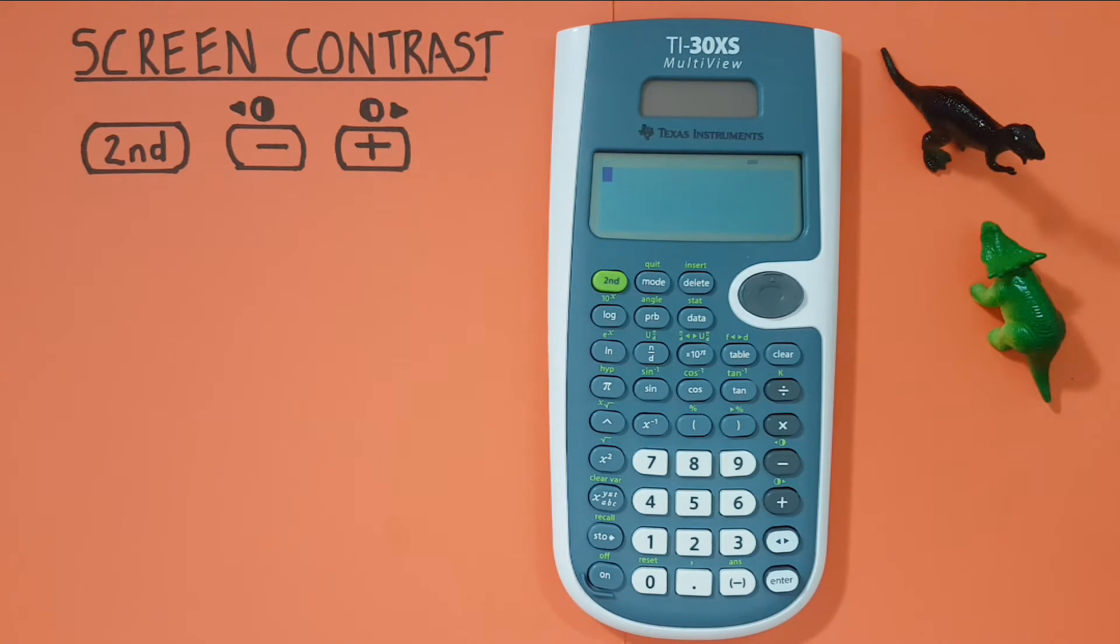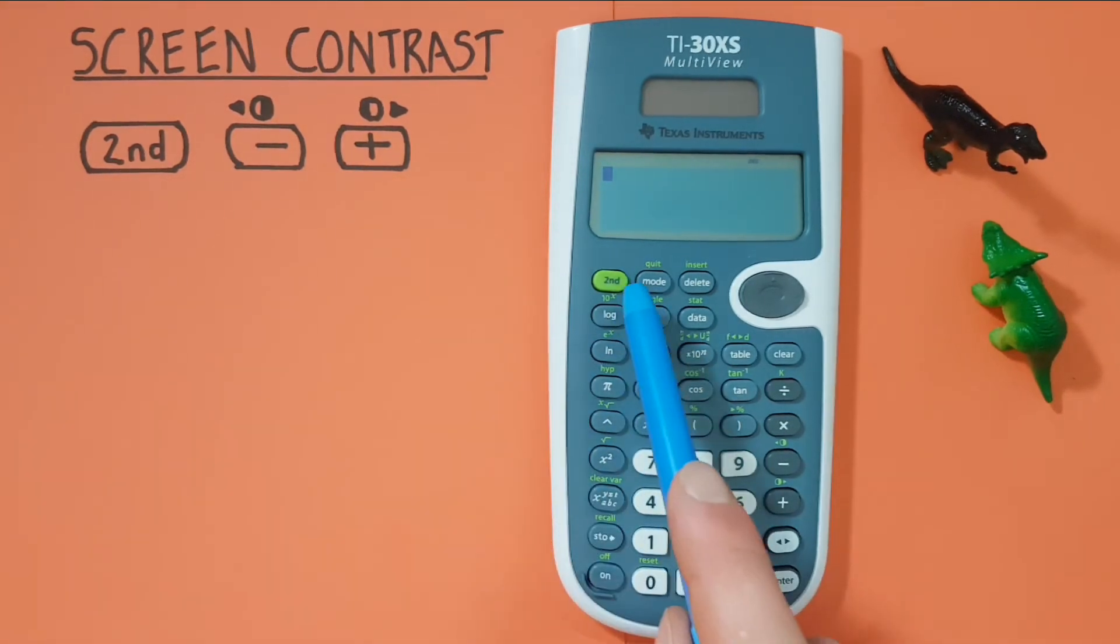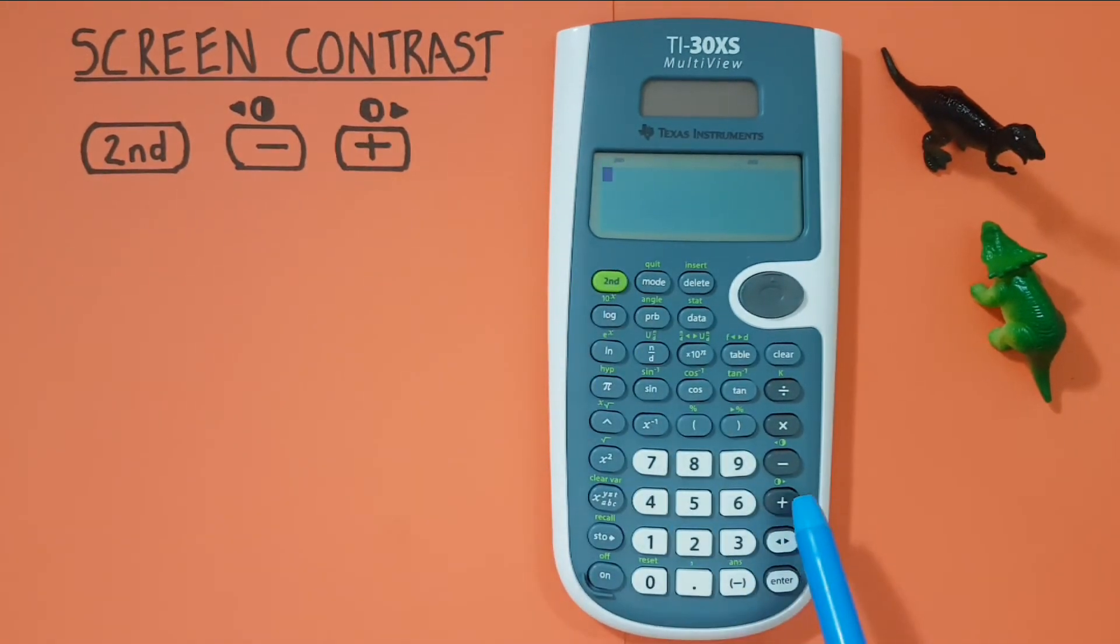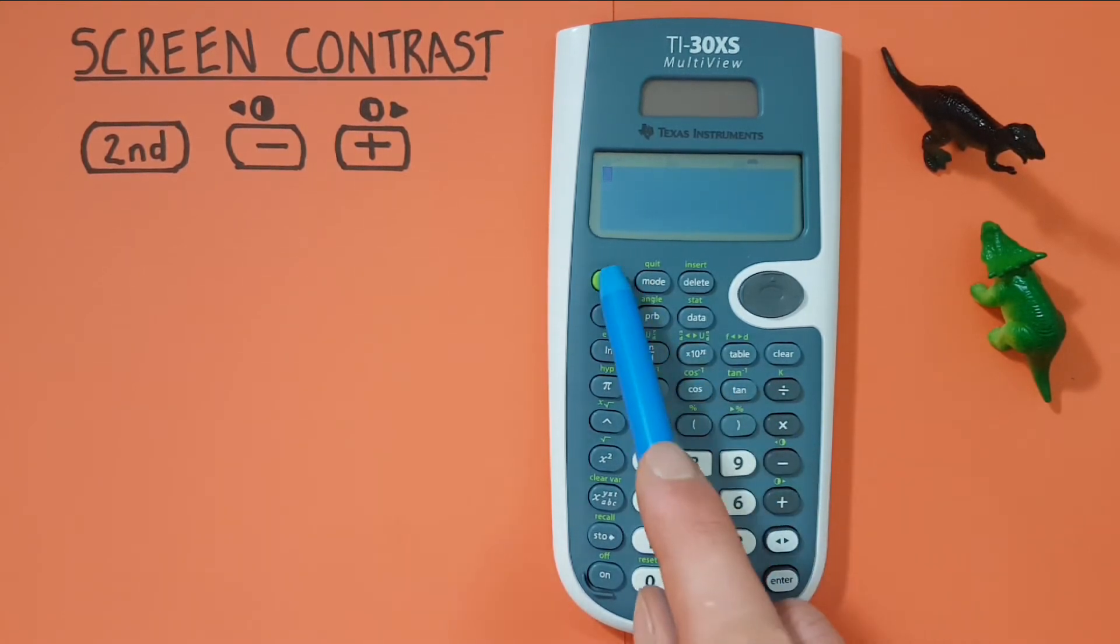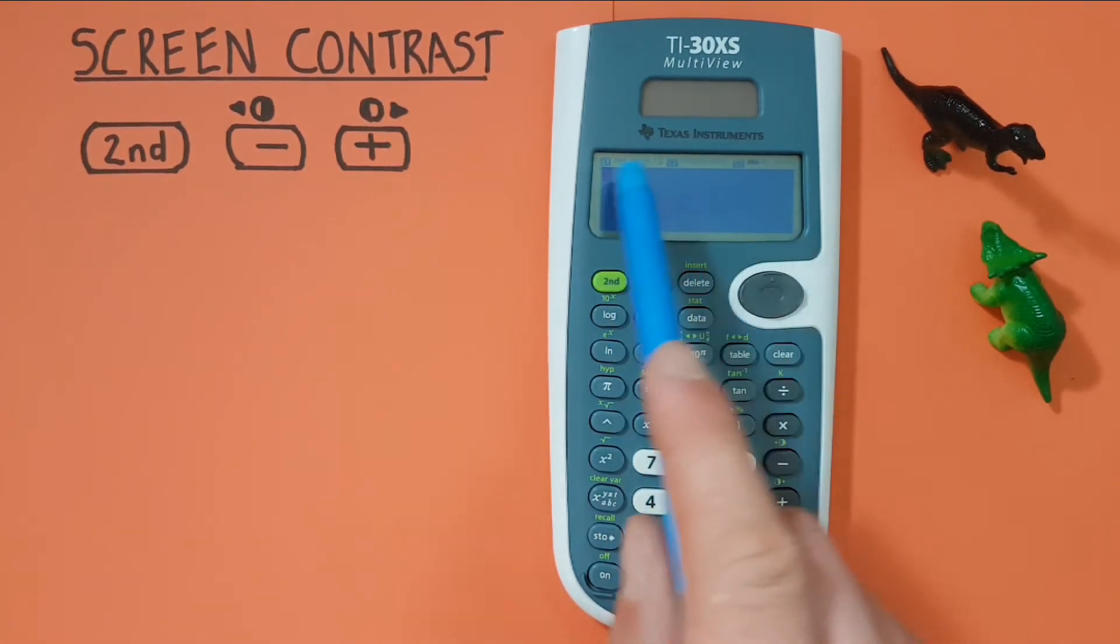So if you want to make your screen appear darker, you would use the second function and the plus key. First, you would press second and then plus, and you keep pressing those two in that order. You should see your screen become darker. There you go, see it's a lot darker there.